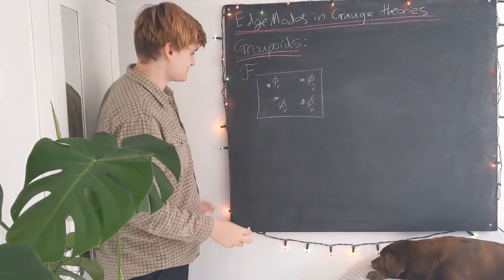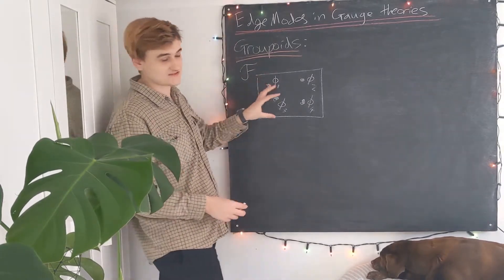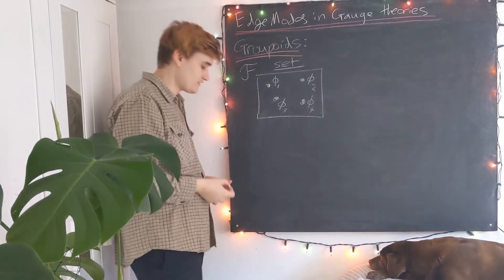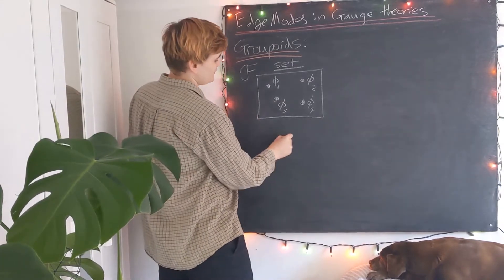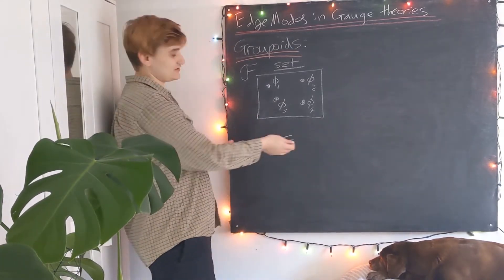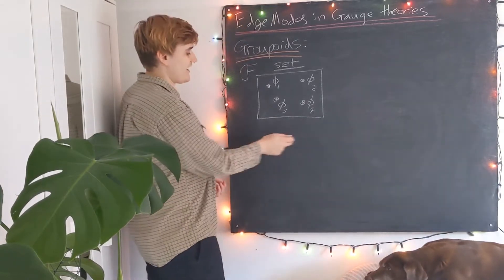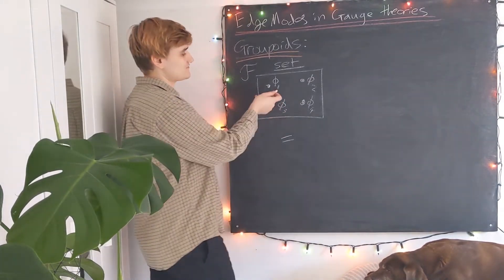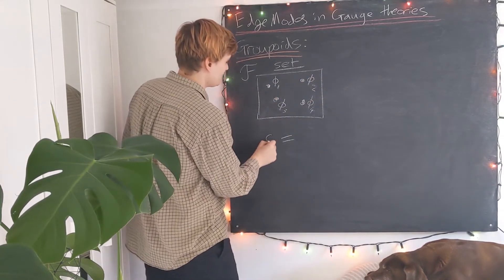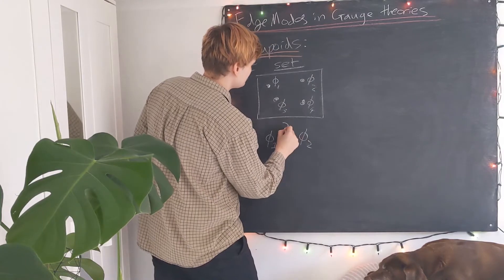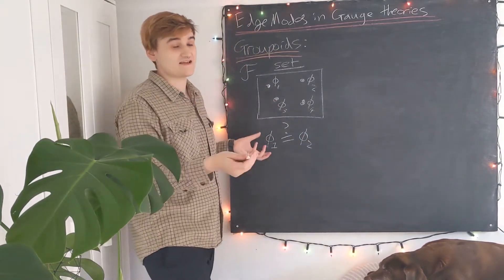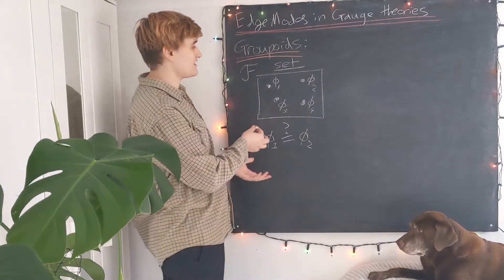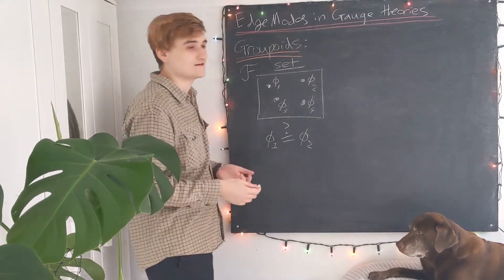So this is a set of fields. Now because this is just a simple set — not a groupoid, this is a set — we can use the set-theoretical relation which is the equals sign. This is a logical statement; it's true if a equals b. We can simply use the equals relation on the set to ask: is φ₁ the same field as φ₂? Because we're simply dealing with a set, we can just compare the elements using the equals sign. This is all fine for classical fields — we can simply lump them together as elements of a set.